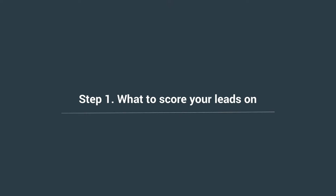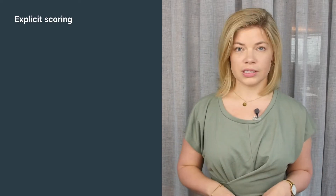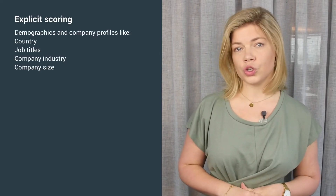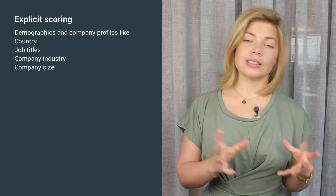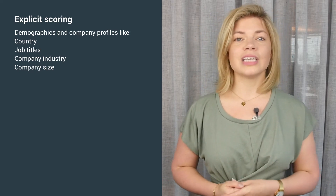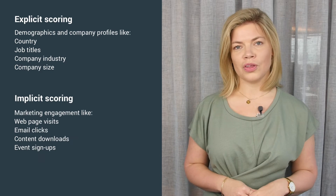Lead scoring works the absolute best when it's set up to fit your business and processes. In this video we'll talk about the steps you need to think about when setting up a lead scoring model that suits you and how to avoid some common lead scoring mistakes. There are two types of scoring rules that you could use: explicit scoring, which means that you score your leads based on their persona, demographics, and company profile; and implicit scoring, which is based on their marketing engagement.